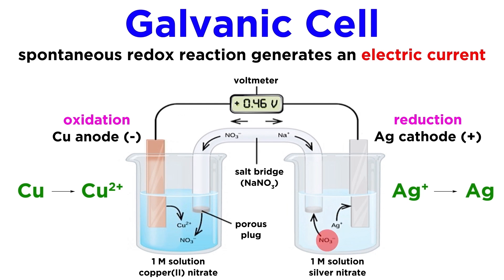To compensate for the loss of positively charged ions, negatively charged nitrate ions leave solution and enter the salt bridge, while sodium ions enter the half-cell from the salt bridge. This is how each half-cell remains electrically neutral, which is what allows the cell to conduct electricity — so without the salt bridge, this wouldn't work.